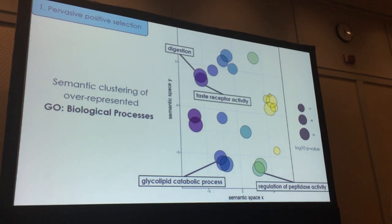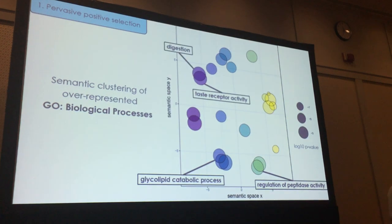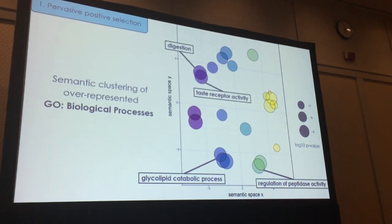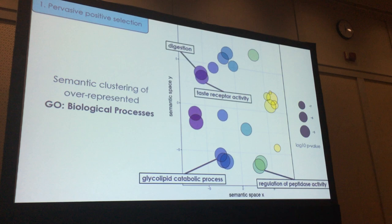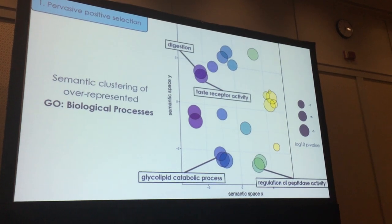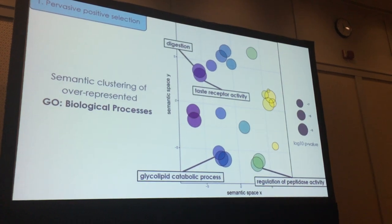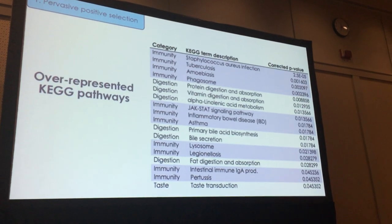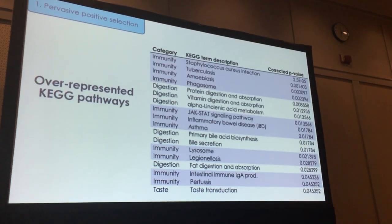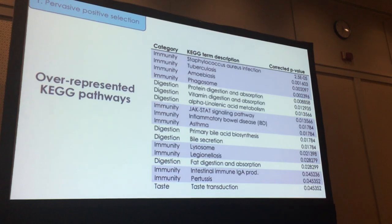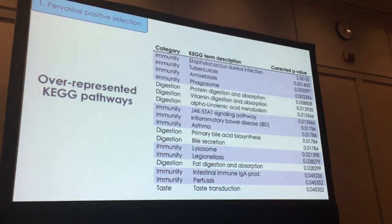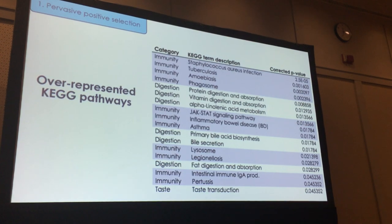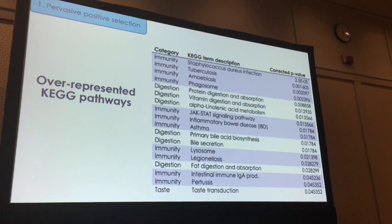We also found a number of categories related to digestive processes — catabolic processes, peptidase activity, and other digestive processes — but also, really interestingly, taste receptor activity. Thinking back to the dietary variation among these species, perhaps these genes are related to the diversification of dietary states among murine rodents. In terms of over-represented pathways, we found a similar pattern: immunity-related pathways primarily related to response to infection by a pathogen, and also a number of digestive pathway terms that were over-represented.